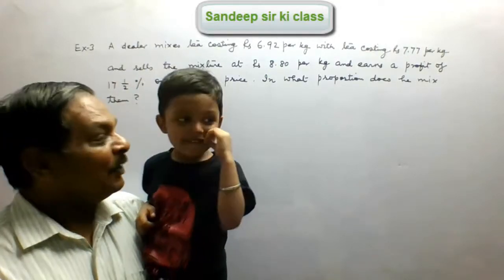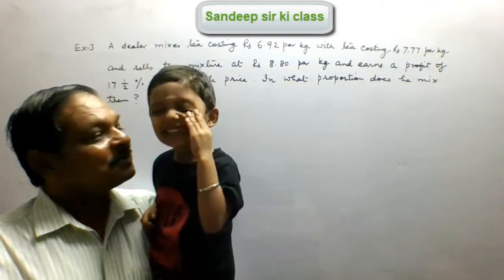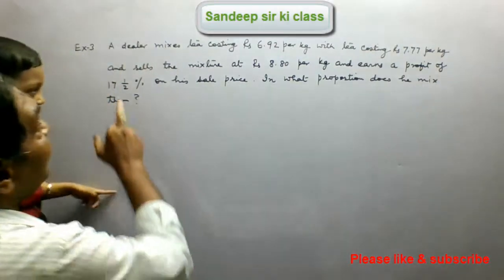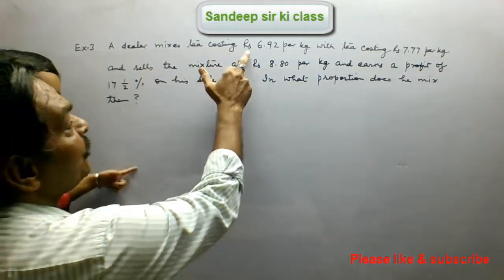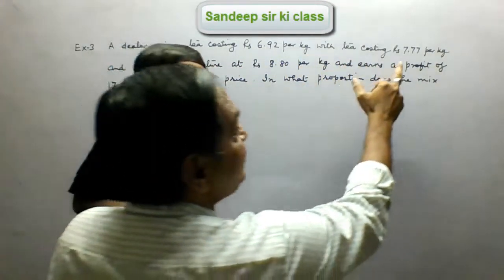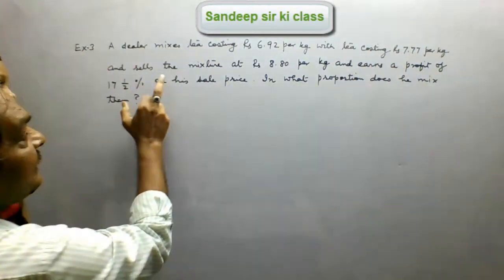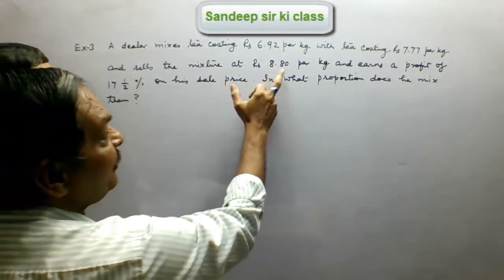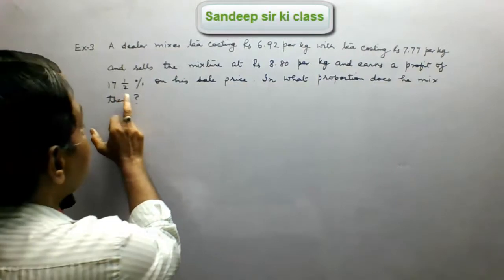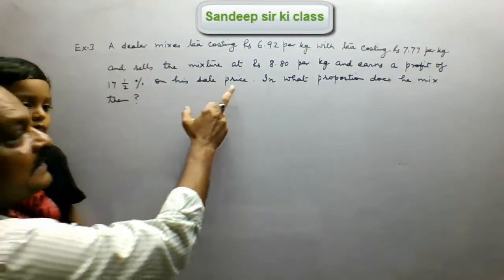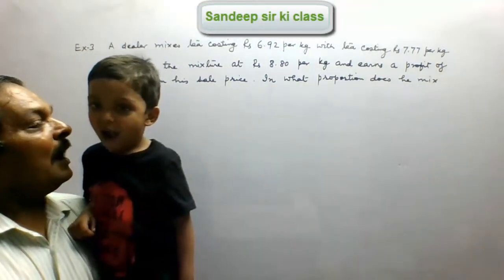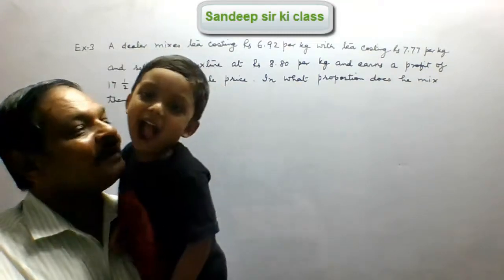I have my grandson Mehul here, so let us continue with him. Example number three: a dealer mixes tea costing Rs. 6.92 per kg with tea costing Rs. 7.77 per kg and sells the mixture at Rs. 8.80 per kg and earns a profit of 17.5% on his sale price. In what proportion does he mix them?